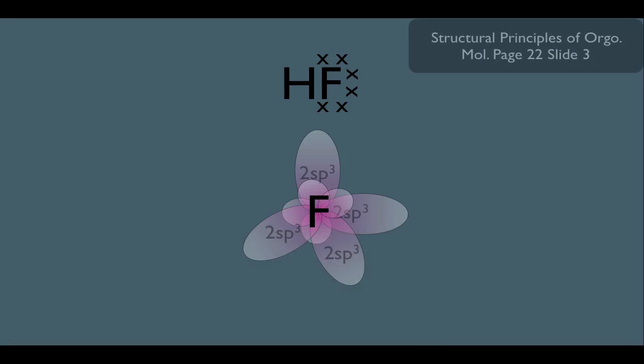Now let's look at the bonding here. Remember, one of fluorine's SP3 hybridized orbitals is going to head-on overlap with the s orbital of a hydrogen. So that explains his one and only sigma bond.